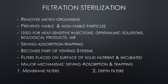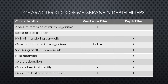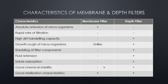Now we will check the different characteristics of membrane and depth filters. There are different characteristics such as absolute retention of microorganisms, rapid rate of filtration, dirt handling capacity, shedding of filter components, and fluid retention. A plus sign indicates which characteristics are applicable to each filter. The rapid rate of filtration is applicable to the membrane filter — a negative sign shown is a mistake, so consider it as positive.